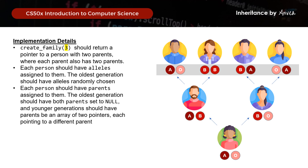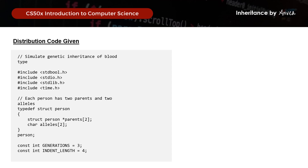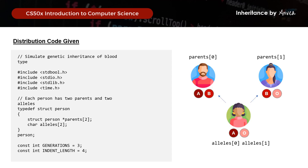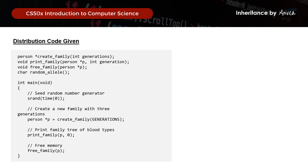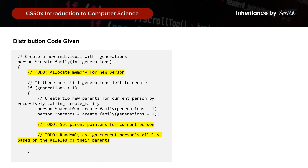Let's look at the distribution code. Each person has 2 parents and 2 alleles, meaning every person we create will have 2 parents and 2 alleles. The main function will create a family with 3 generations using createFamily, then print the family's blood types, and then free memory. For createFamily, we first allocate memory for this person. If there are more than 1 generation, we add 2 parents on top of that person, and we set parent pointers for the current person to the 2 parents we have just created.